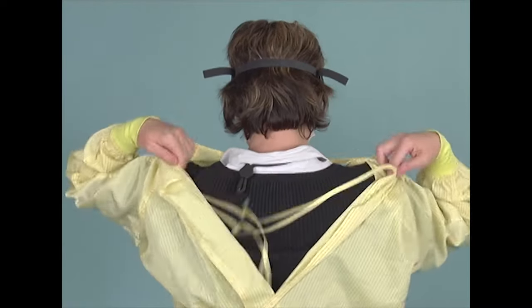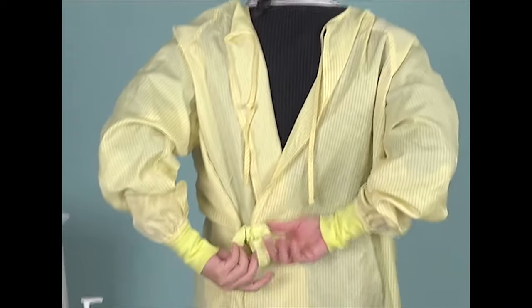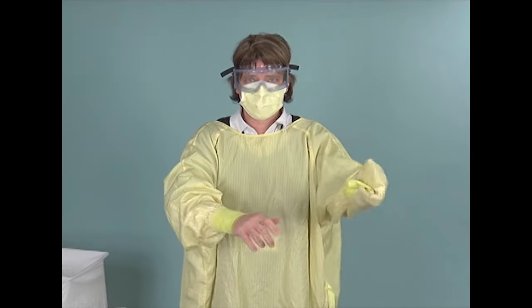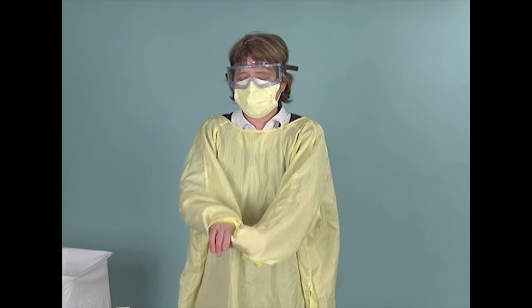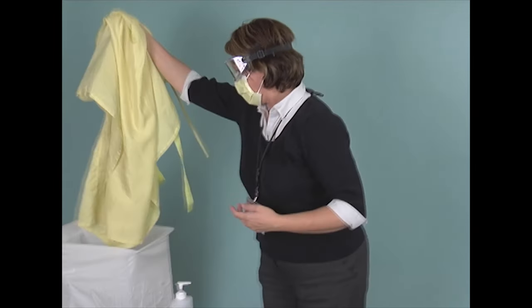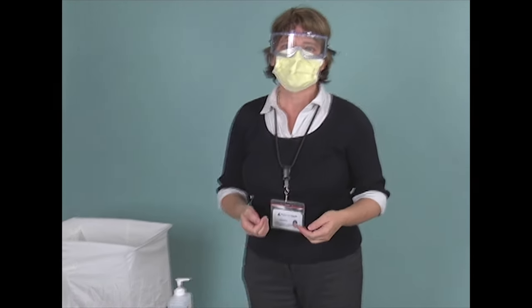Untie the top tie, then the bottom tie. Remember clean to dirty. So reach inside the first cuff and pull your hand in. And with the gown over your hand, reach over and pull that cuff down as well. Continue to pull, remembering clean to dirty. The gowns are a one time use so put them into the dirty laundry hamper and wash your hands.